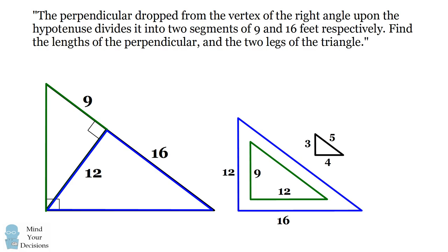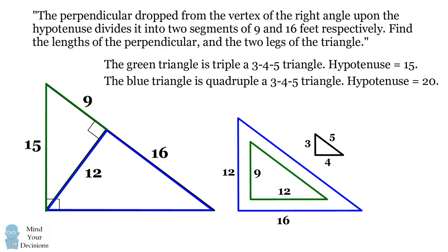The green triangle has lengths which are 3 times that of a 3-4-5 right triangle. Which means its hypotenuse has to be 3 times 5 which is 15. Similarly the blue triangle is scaled up 4 times a 3-4-5 right triangle. So its hypotenuse will be 4 times 5 which is equal to 20. And that's the solution.